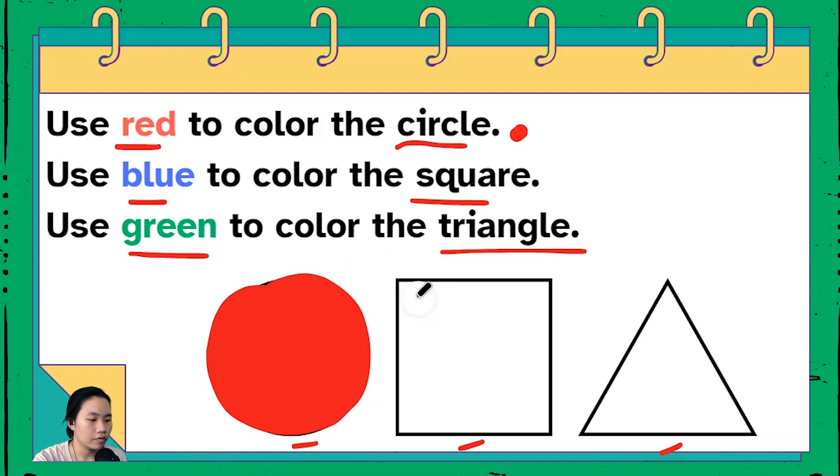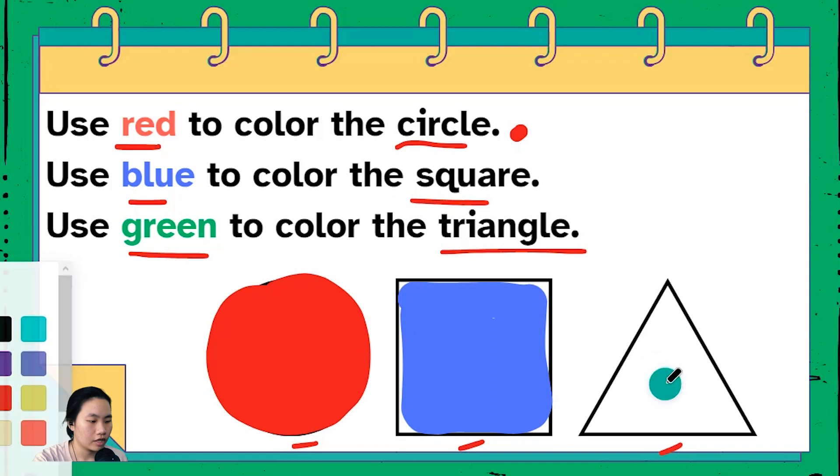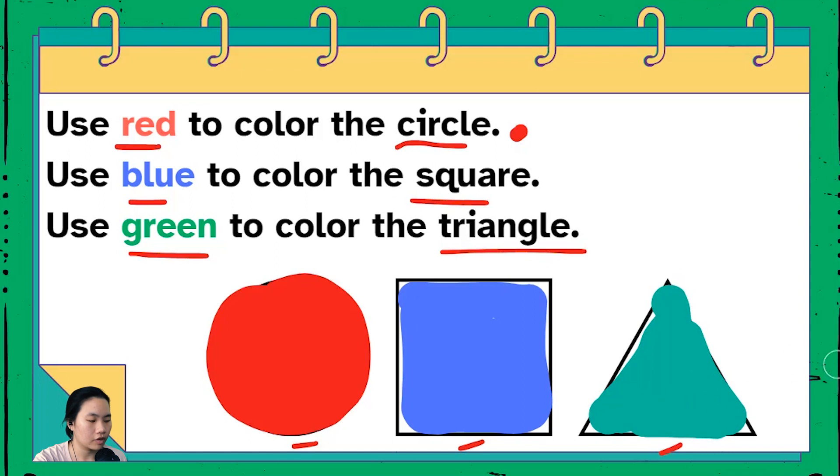Okay blue for the square. Okay lastly use green for the triangle. Green for the triangle. Okay so in the end what do we have? We have a red circle, a blue square, and a green triangle.